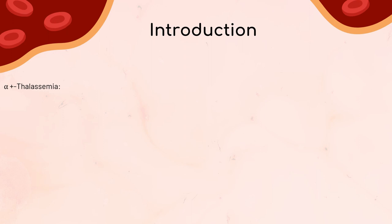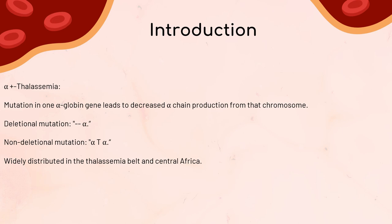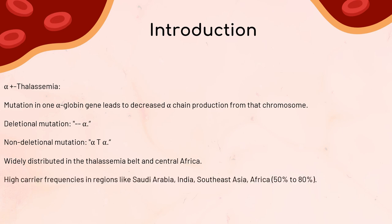Next, alpha-plus thalassemia: a mutation in one alpha-globin gene results in decreased alpha-chain production from that chromosome. We have (-alpha) for deletional mutations and (alpha-T-alpha) for non-deletional mutations. Alpha-plus thalassemia is widely distributed in the thalassemia belt in Central Africa, with high carrier frequencies in regions like Saudi Arabia, India, Southeast Asia, and Africa, reaching 50% to 80%. It's also found in about 30% of African Americans.